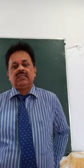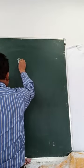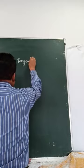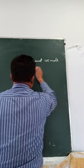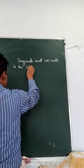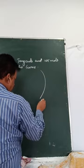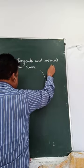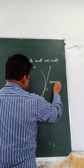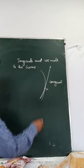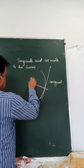Today we will study about Tangents and Normals to the curve. If there is any curve here, the line that touches the curve at one point is called the tangent. And the line that is perpendicular to the tangent at this point P is called the Normal.